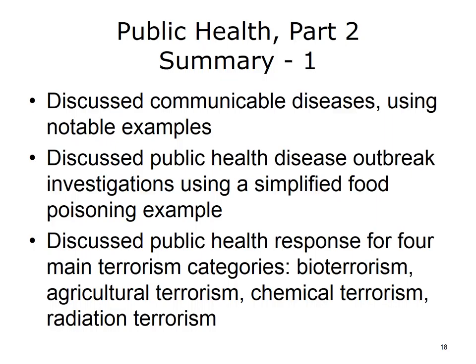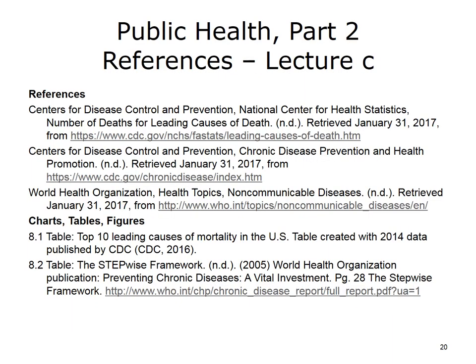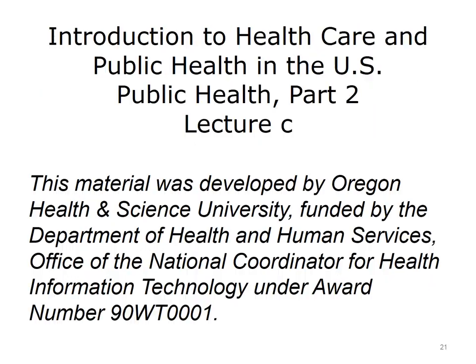This also concludes the unit, Public Health Part 2. In summary, communicable diseases were discussed in detail using notable examples, including smallpox and polio. Public health response was discussed for the four main categories of terrorism: bioterrorism, agricultural terrorism, chemical terrorism, and nuclear radiation terrorism. Categorization of bioterrorism agents and the Laboratory Response Network were discussed. The importance and impact of chronic diseases was discussed. Behavior modification was considered as a remediation tool. The World Health Organization's Stepwise Framework was illustrated. Environmental public health topics were reviewed, including some overlap with chronic diseases.